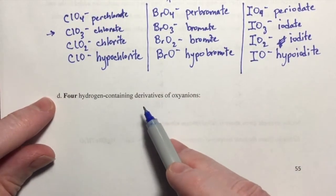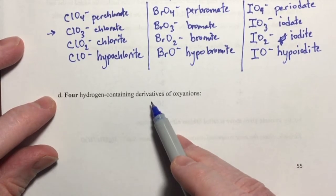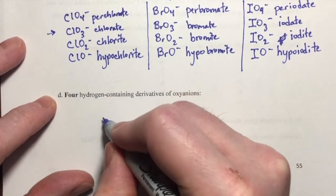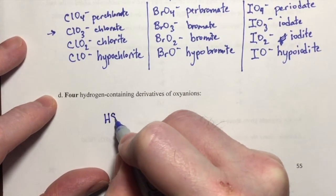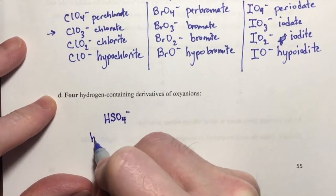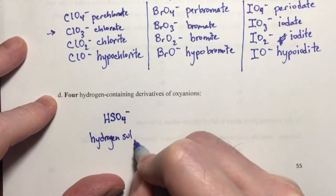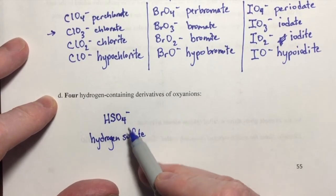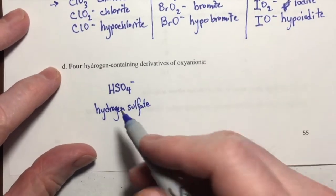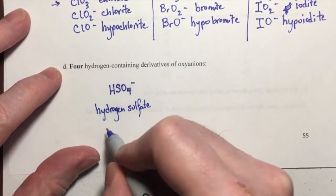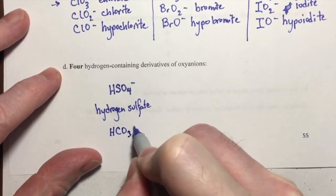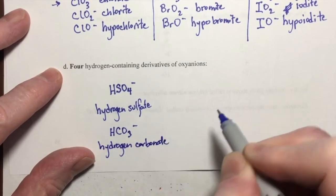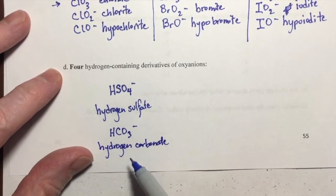These last four that you need to know for this class are the hydrogen containing derivatives of certain oxyanions. So the hydrogen containing derivative of sulfate is the hydrogen sulfate ion, HSO4 with a minus charge. The hydrogen containing derivative of carbonate is HCO3 with a minus charge, hydrogen carbonate.